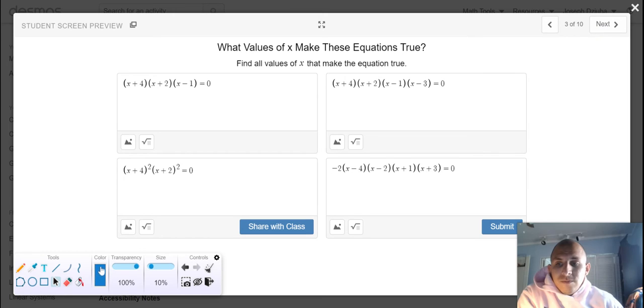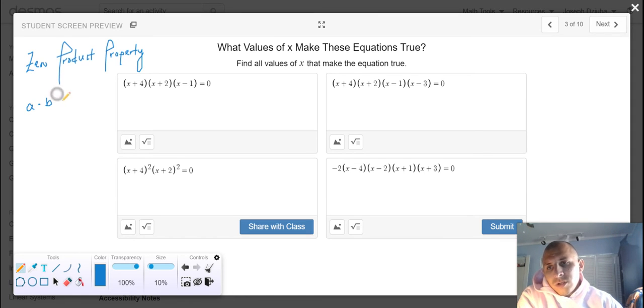A long time ago, you were introduced to this product called the zero product property. If you're multiplying two or more terms together, but the final product is zero, at least one of them had to equal zero.